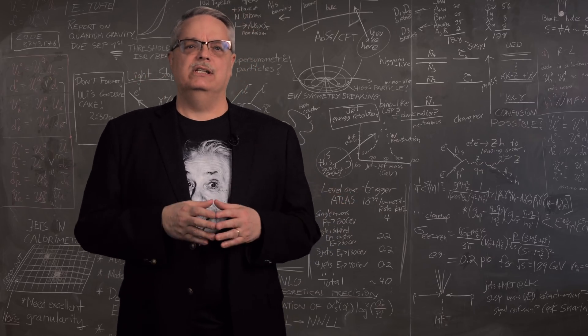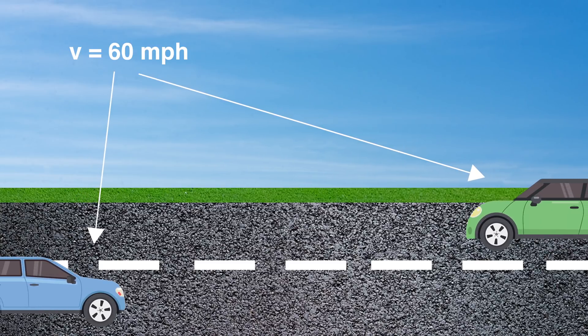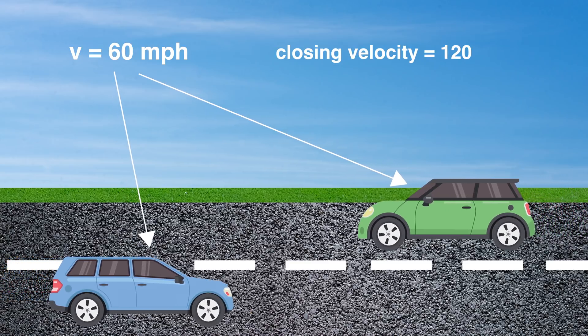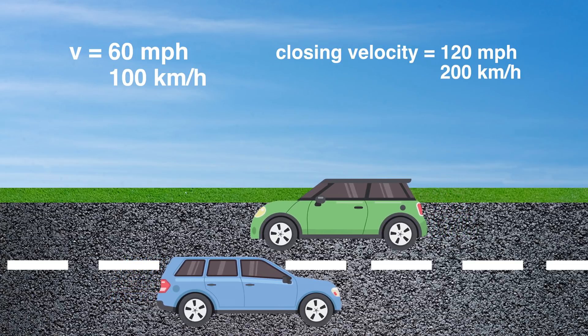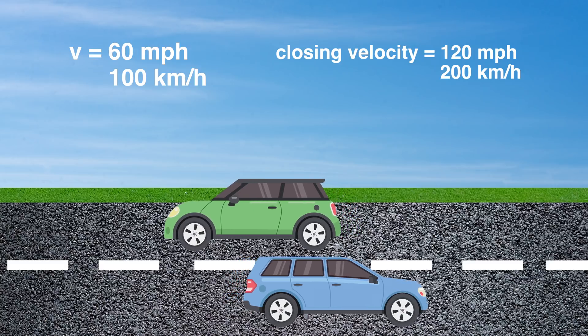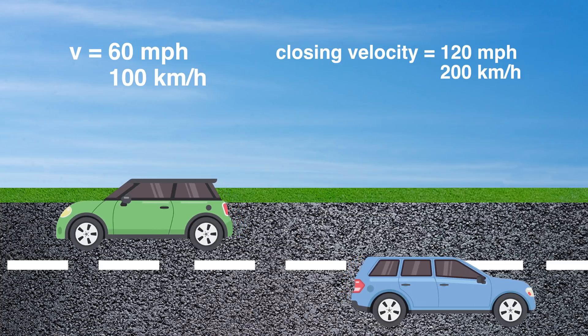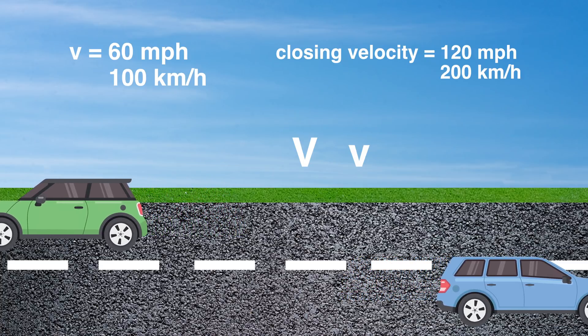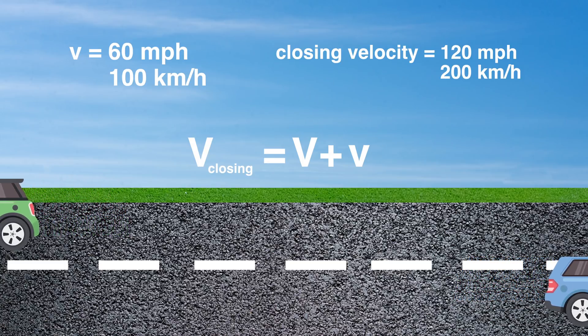You know how to add velocities in the familiar world. If two cars head towards one another, each moving 60 miles per hour, their relative closing velocity is 120 miles per hour. By the way, that's 100 and 200 kilometers per hour for you guys who aren't bilingual. So that's super easy. If two people are heading towards one another with two different velocities, call them big V and little v, then if you ask one of them what their closing speed is, it's just v closing equals big V plus little v.